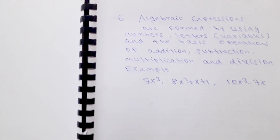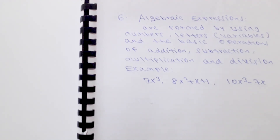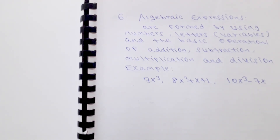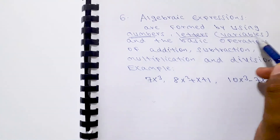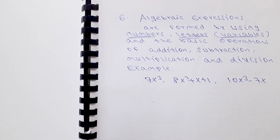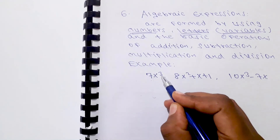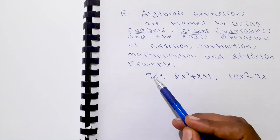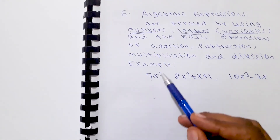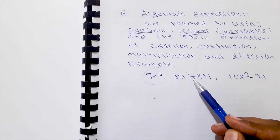Algebraic expressions are formed by using numbers, letters or variables, and the basic operations of addition, subtraction, multiplication, and division. For example: 7 is a number, x is a variable — so 8x squared plus x plus 1 is an algebraic expression using numbers, variables, and basic operations like plus.